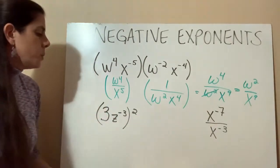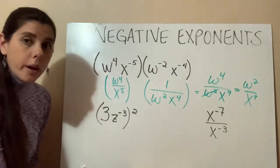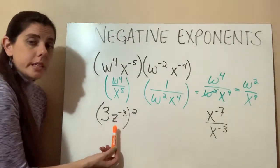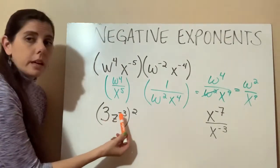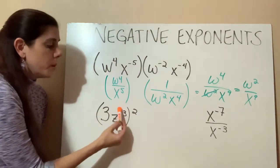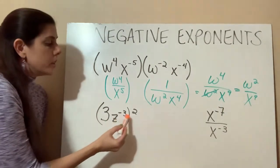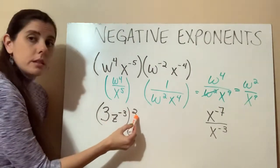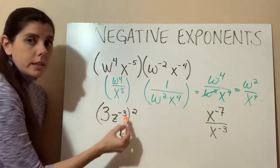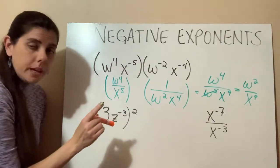How about this next one? We have 3z to the negative 3, all of that is squared. So again, remember what the base is. It might be easy to say, okay well, this 3z to the negative 3 all needs to move to the bottom. But this exponent right here is only on the z, okay? So the 2 out here, the exponent out here is on everything inside. But this negative 3 is only on the z, so keep that in mind.